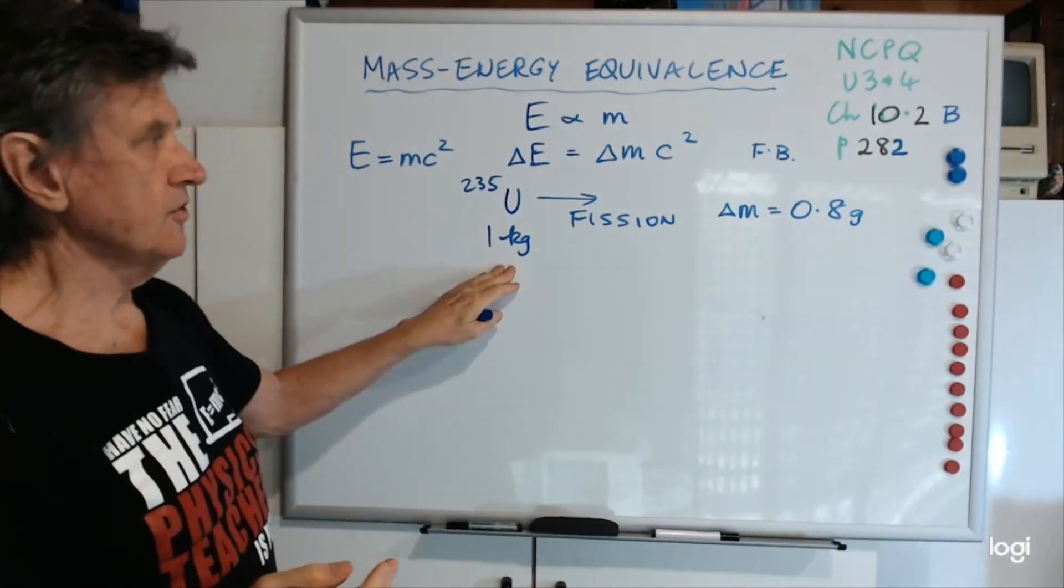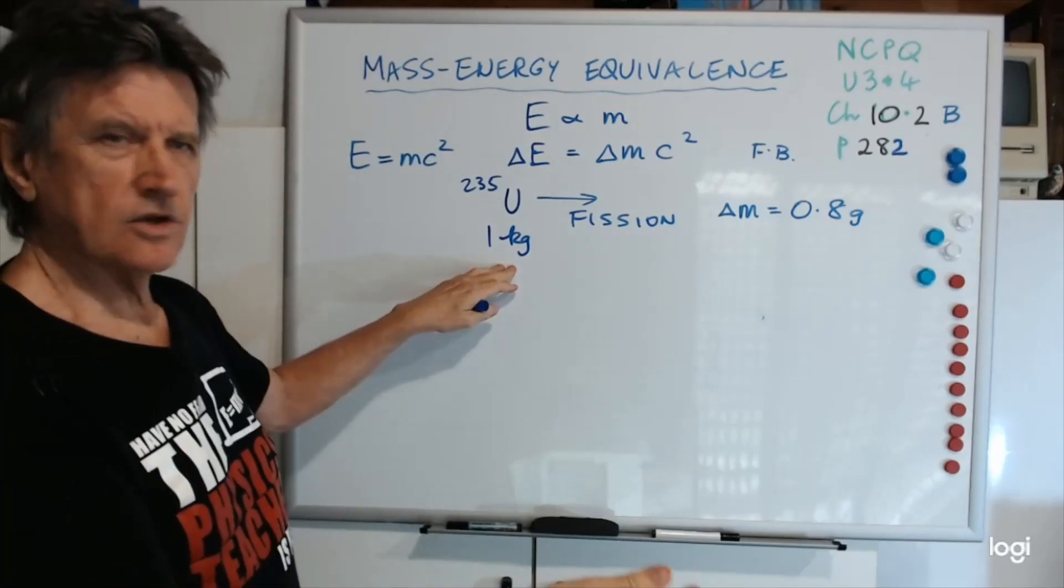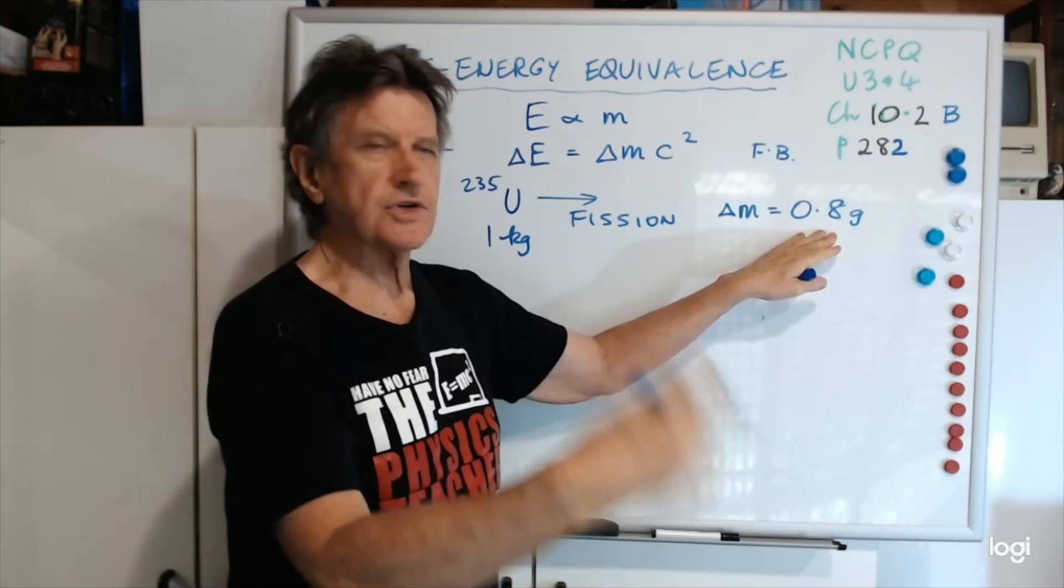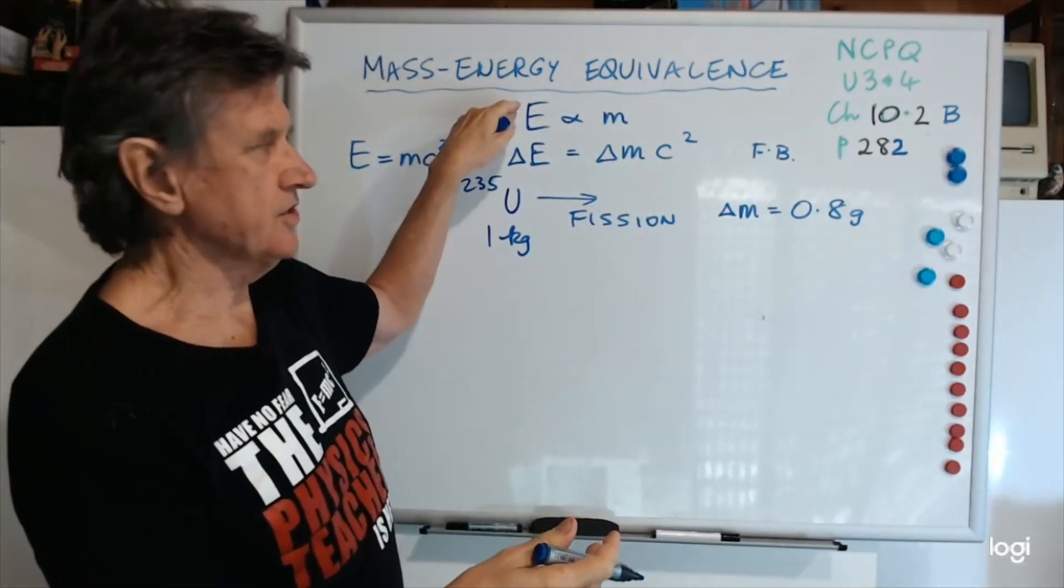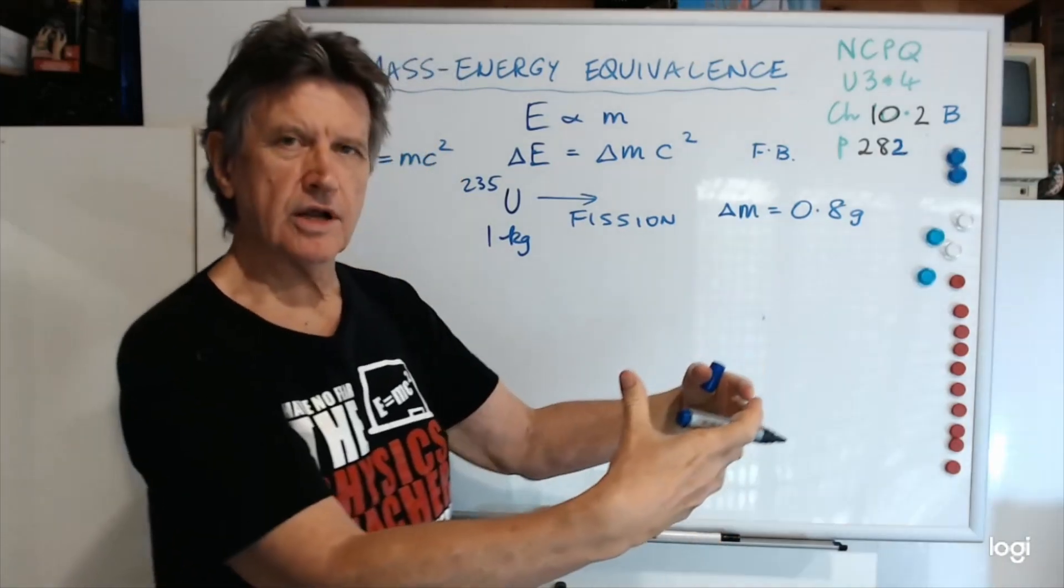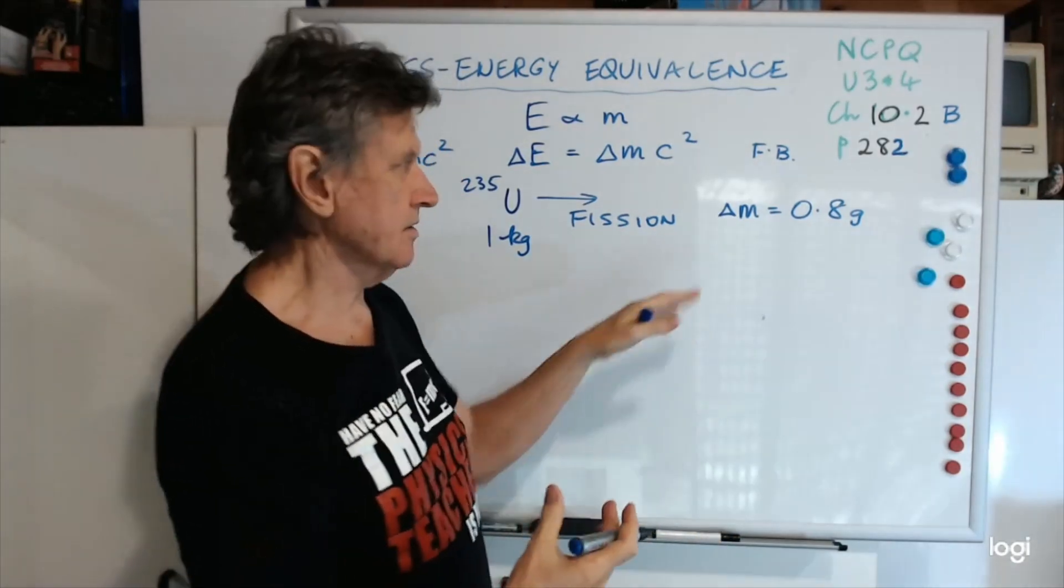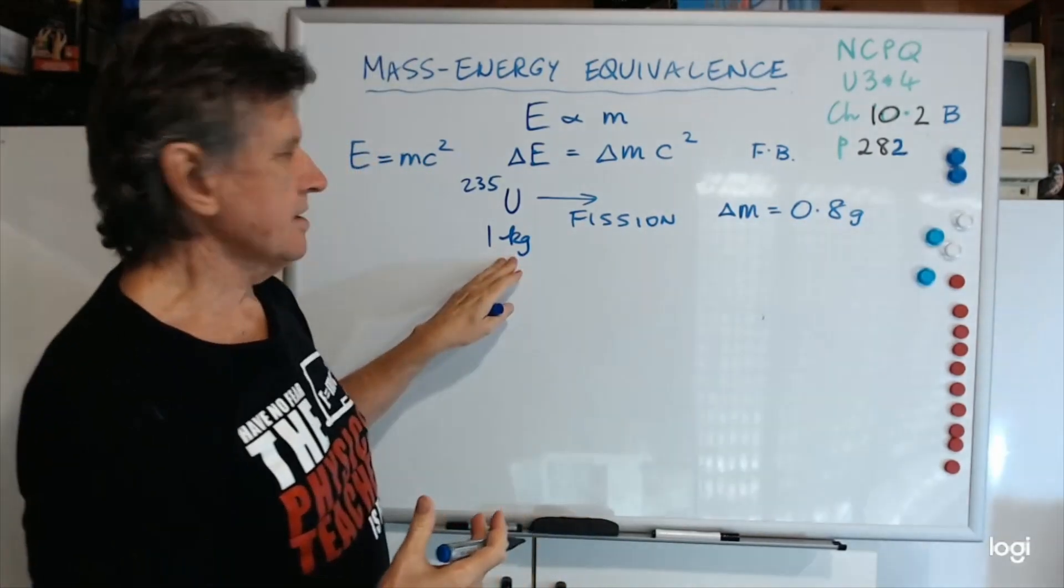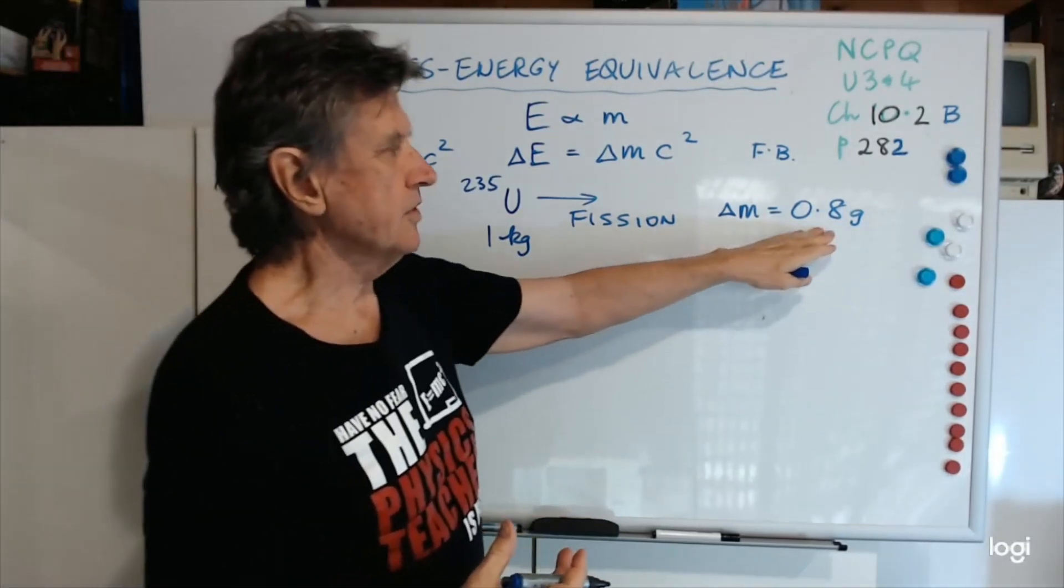But, you actually only have a delta m value of about 0.8 of a gram. So that one kilogram of fuel loses 0.8 grams of mass, which is equivalent to a certain amount of energy. And that energy is in the form of the kinetic energy of the products, the gamma rays, the heat, and so on. Now let's have a look at a conversion. So, one kilogram of uranium has a delta m of 0.8.